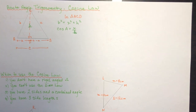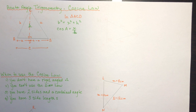Acute angle trigonometry. Today we're going to do the cosine law and we're going to prove the cosine law by using two properties that you're familiar with: the Pythagorean Theorem, and the cosine ratio for primary trigonometric ratios.